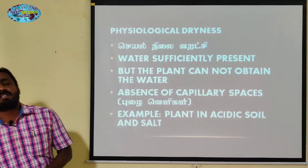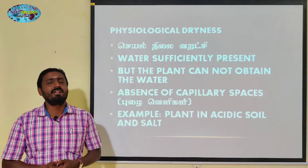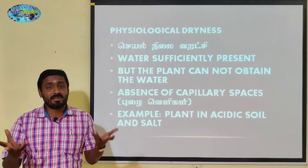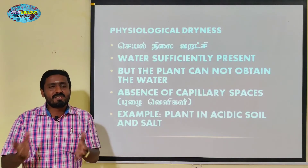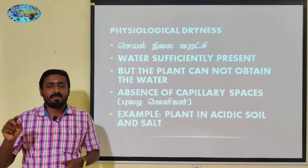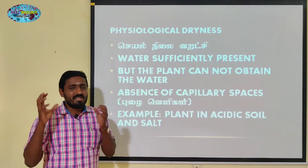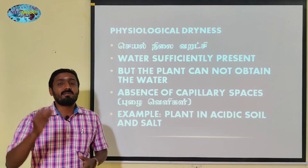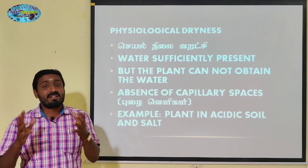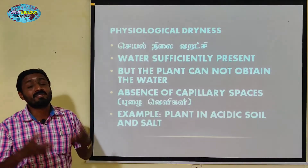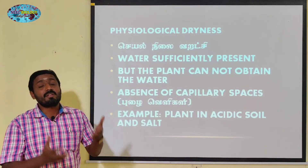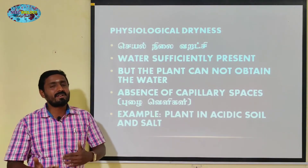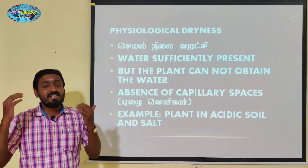Sometimes the plant is in acidic soil or salty water conditions. Salt water has very high osmotic potential. In mangrove vegetation, the salt water will not be absorbed by the root system. The root system in mangrove plants has some special characters to deal with this condition.